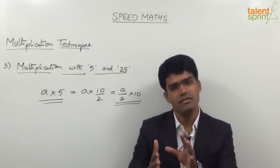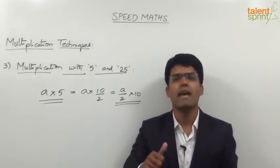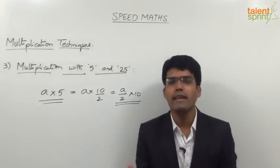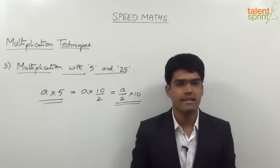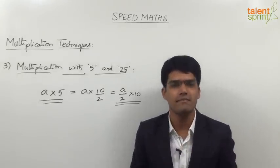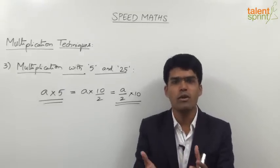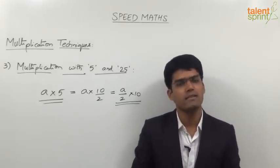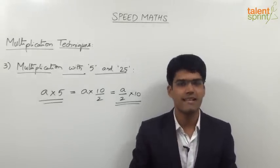Remember, don't try to write these steps on paper. There are only two simple steps: take half, then multiply with 10. Simply visualize the number and try to get the answer. 48 into 5 — the answer is 240, because half of 48 is 24, taken 10 times is 240. Similarly, 88 into 5 is 440: half is 44 into 10. And 72 into 5 is 360.